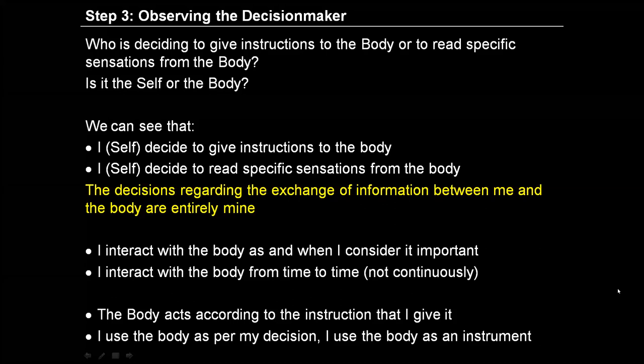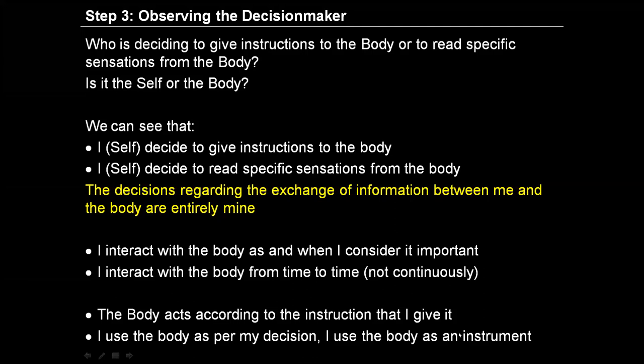If I do all this, there are two important conclusions we can see. One is that the body acts according to the instruction of the self. The other is that I use the body as per my decision — I use the body as an instrument. So the body is not asserting itself; all the decisions are taken by me, not by the body. The decision for giving instruction to the body is decided by me. The decision for reading some sensation from the body is also taken by the self. Both ways, it is the self which is deciding, and the self is using the body as an instrument as and when it finds it important, from time to time, not continuously.